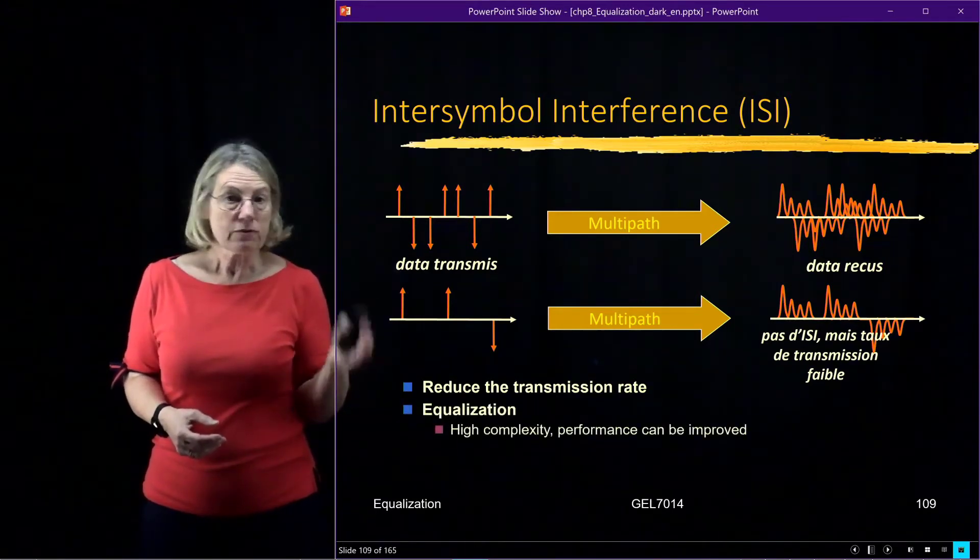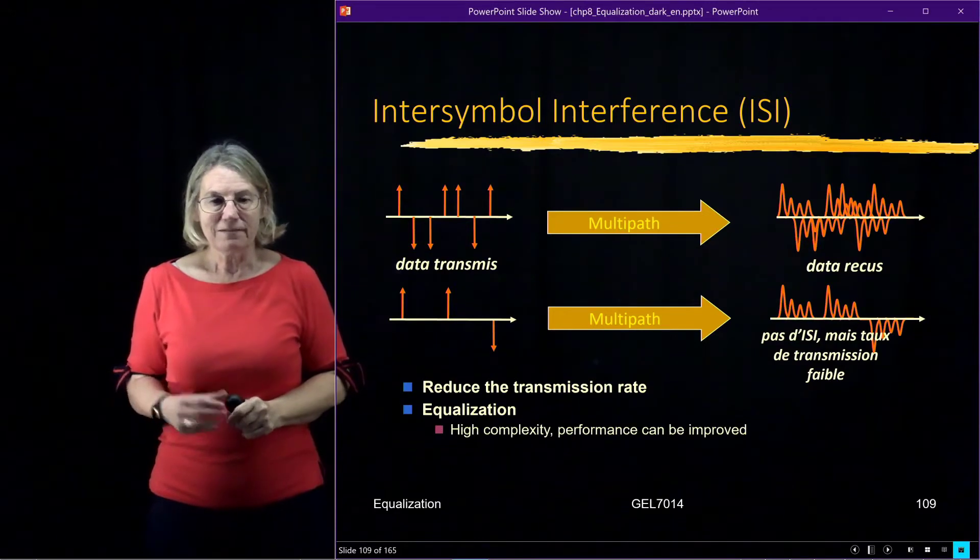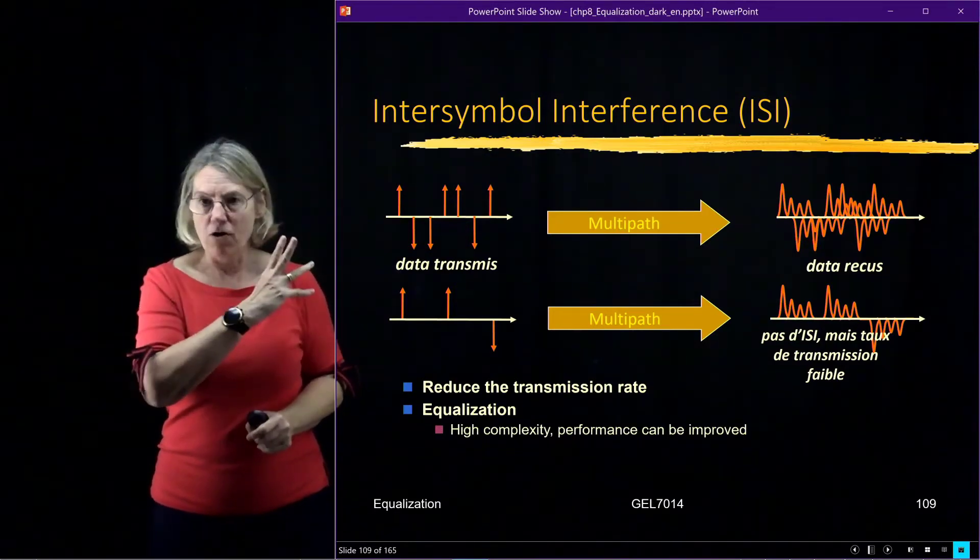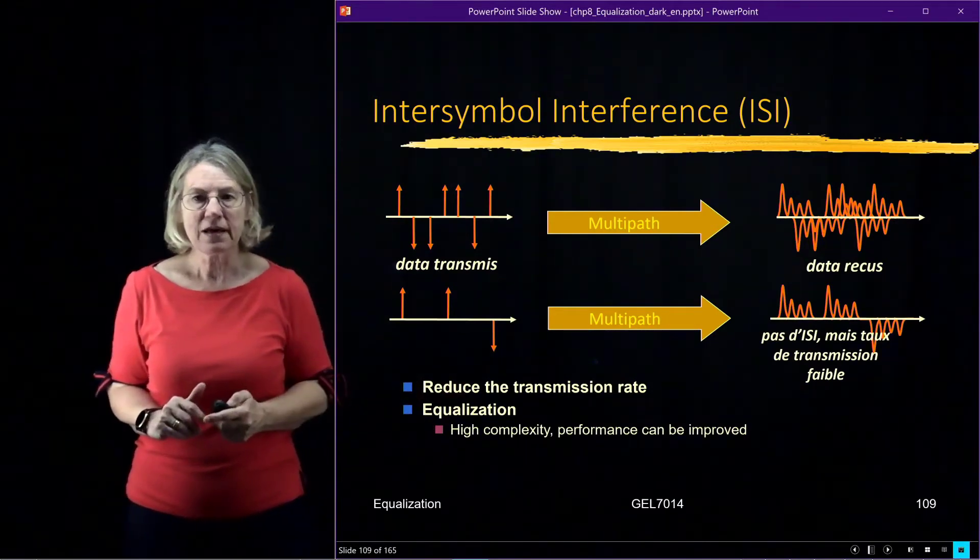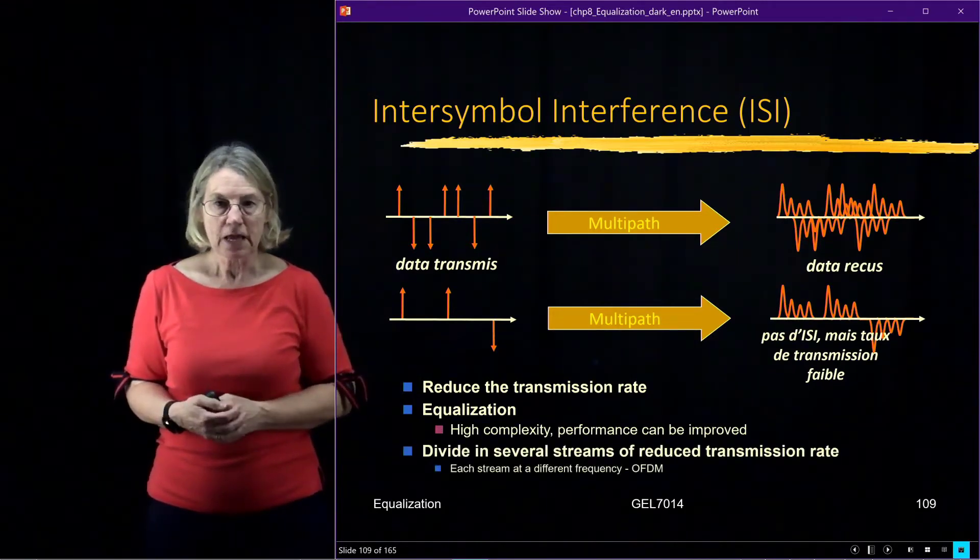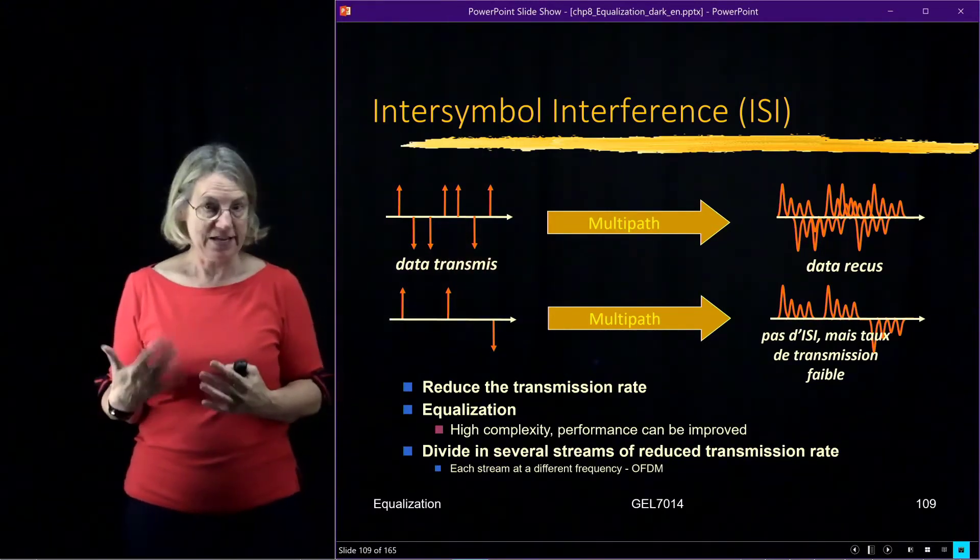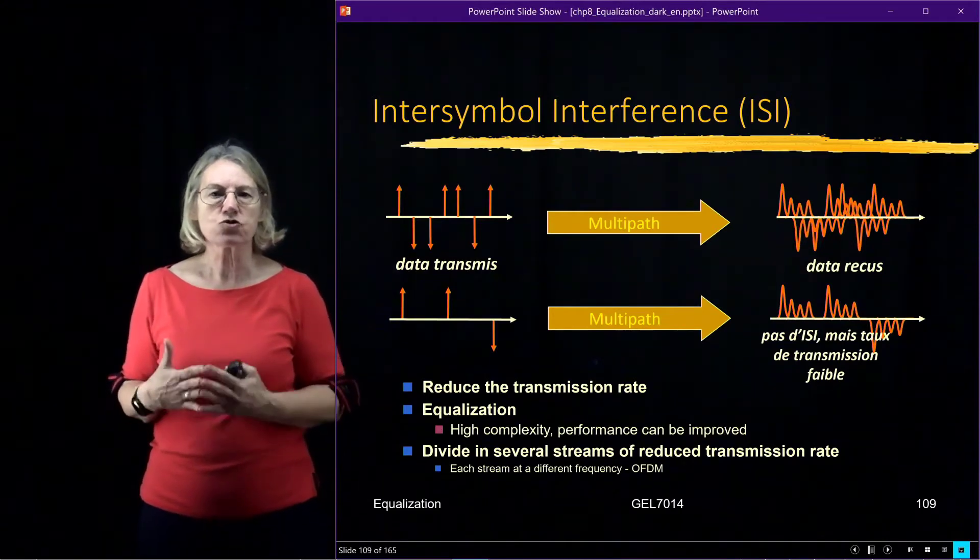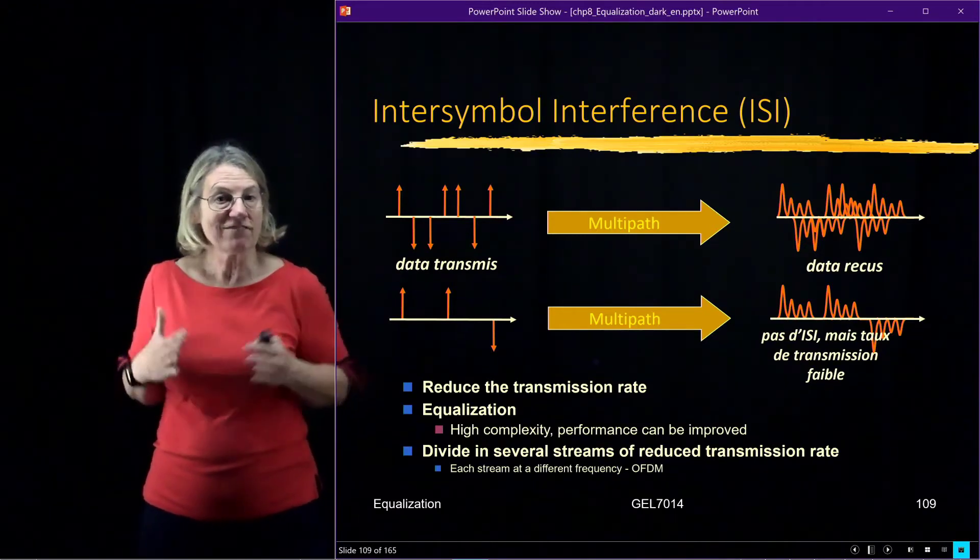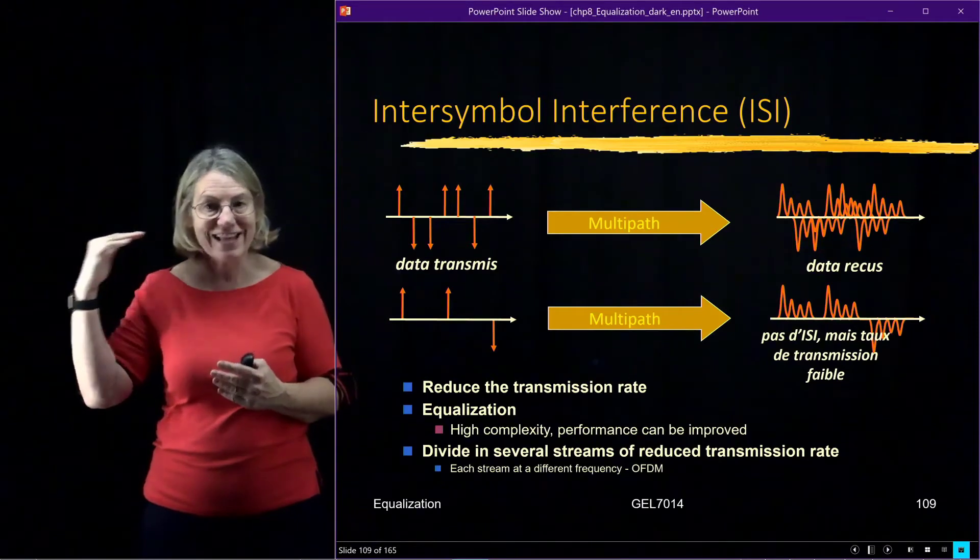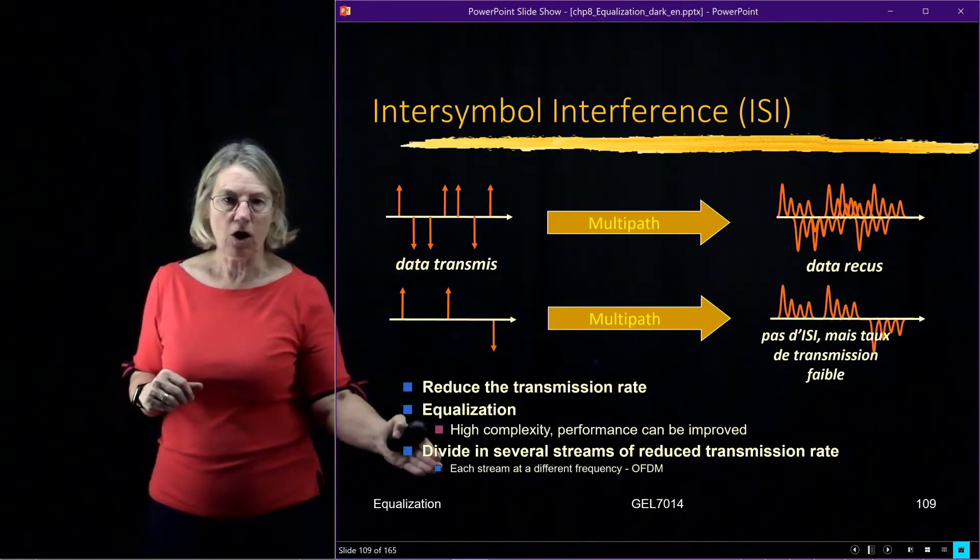I could use equalization, which we've seen. I use an equalizer to zero out the received data. But that can be high complexity, maybe justified in some systems. The solution is to take the data and parallelize it, creating multiple data streams. That way, each stream can be slower, and I can still keep the net data rate high even though in a given channel the rate is low. That's OFDM. Each stream is on a separate subcarrier.